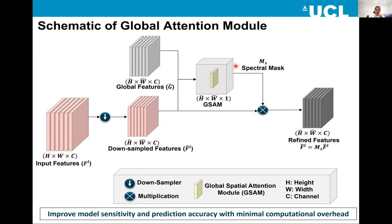This is how we compute a refined feature map at any intermediate layer. We use these refined feature maps at multiple intermediate layers, then aggregate with the global features for final predictions. This attention module will improve model sensitivity and improve prediction accuracy with minimum computational overhead.